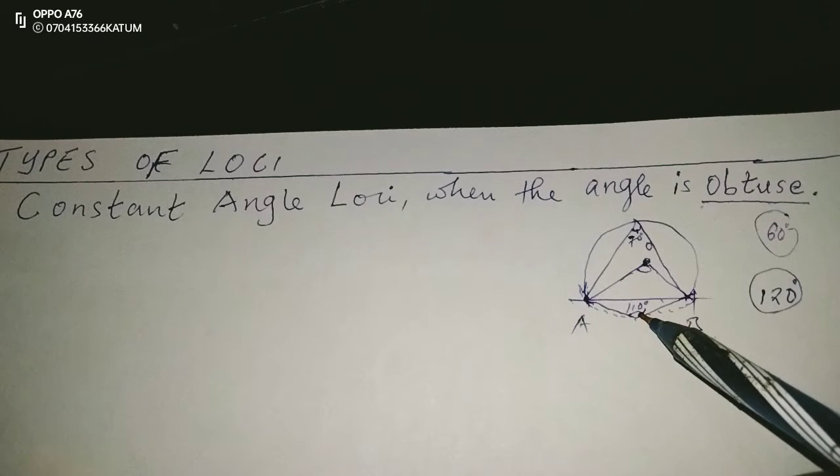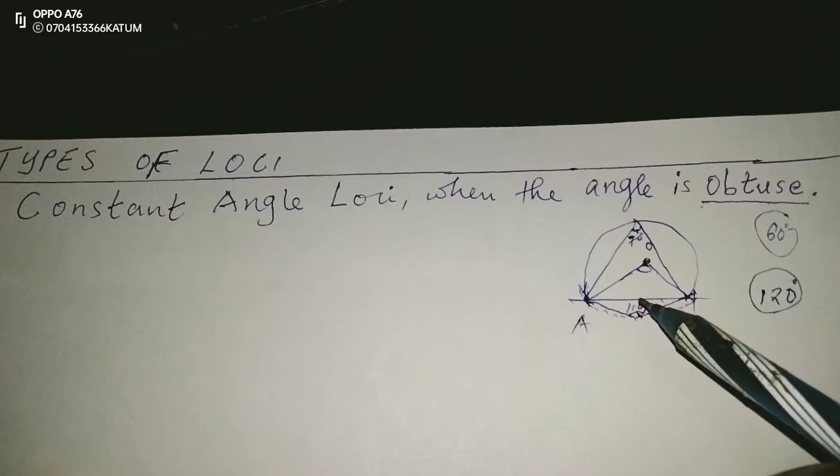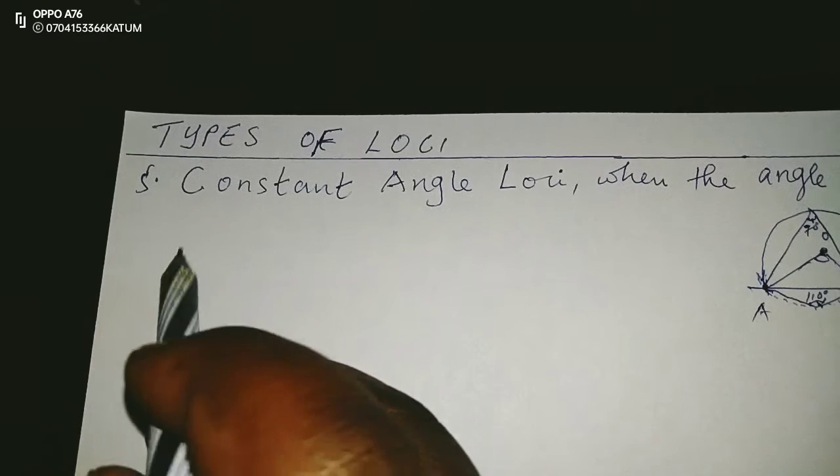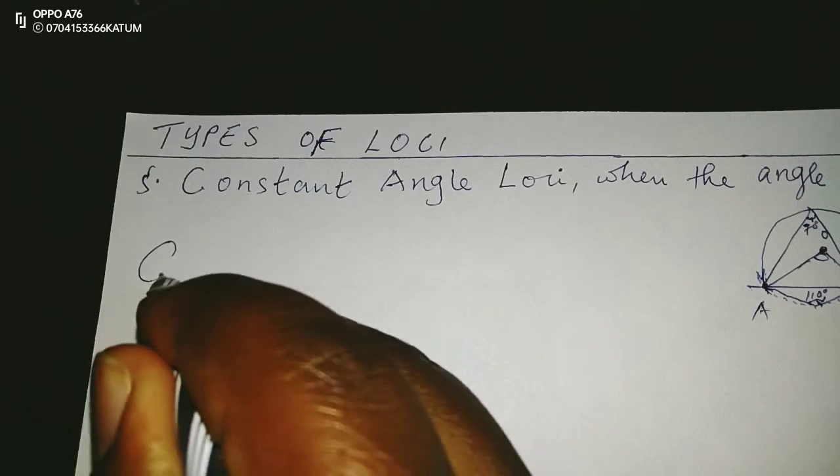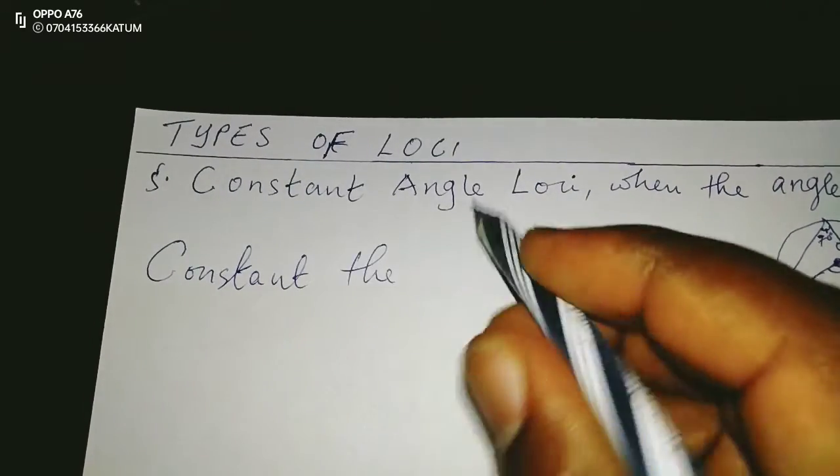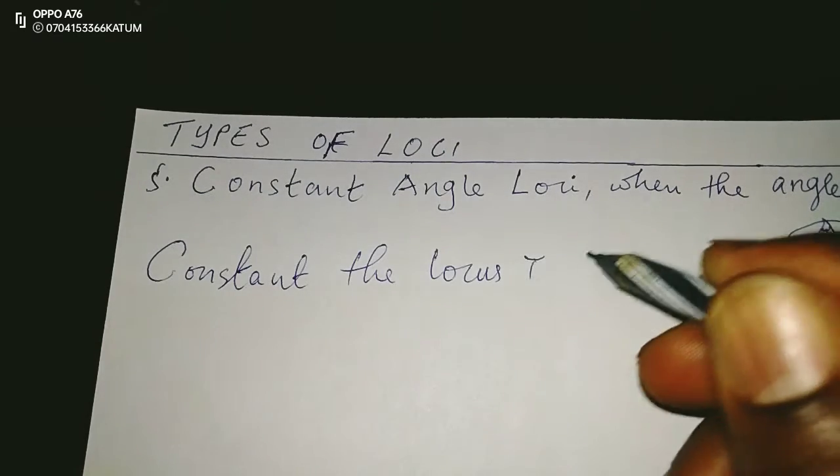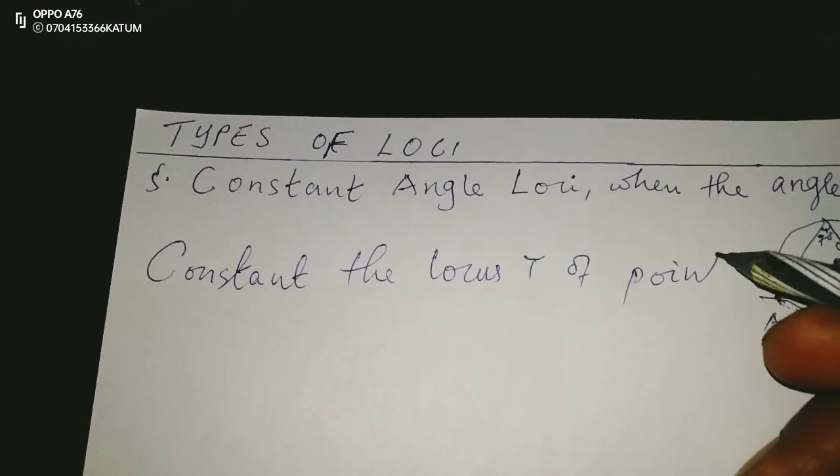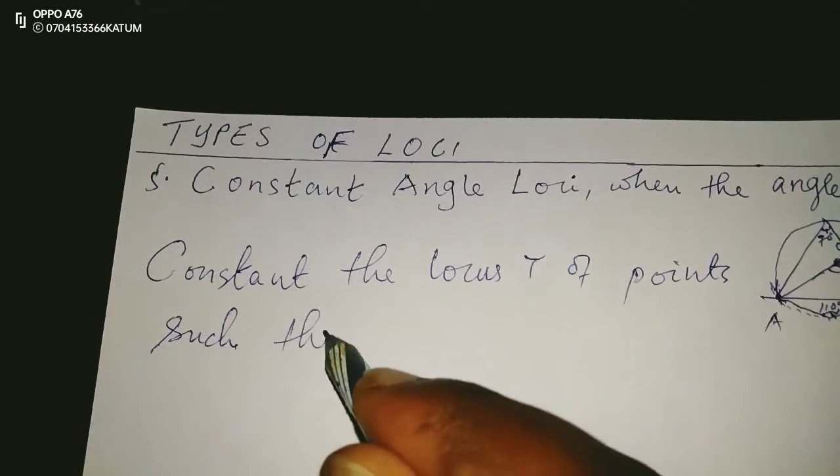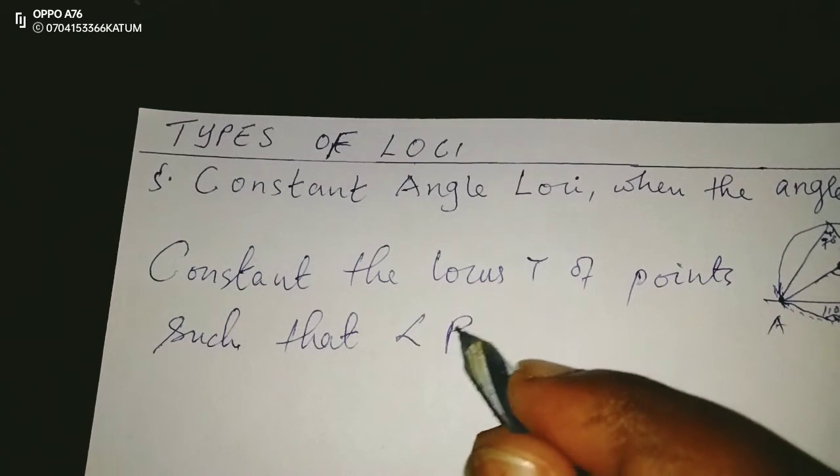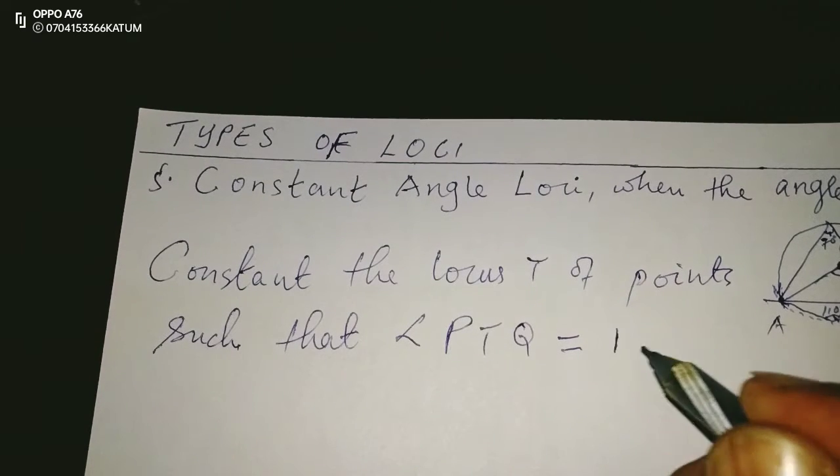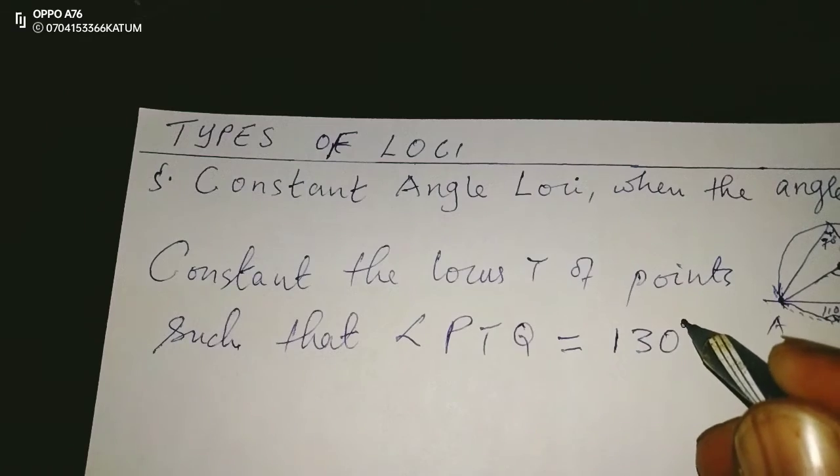So that they add up to 180. Let me give an example so that this concept may be understood. We'll construct the locus of points such that angle PTQ equals to 130 degrees.